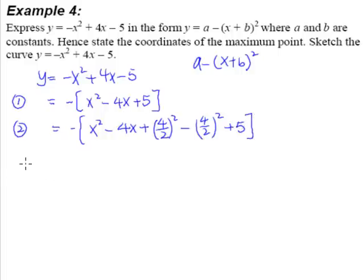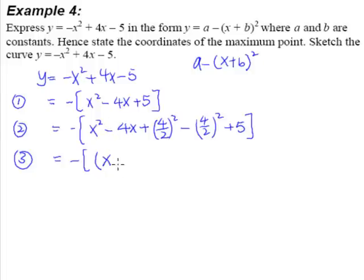What we have done will lead us to step 3 of our completing the square process. We will now be able to compress these 3 terms into a perfect square. But when this is a negative, this will be a negative. So 4 divided by 2 will be a 2, squared. By adding this extra little 4 over 2 squared, we have changed these 3 terms into a perfect square.